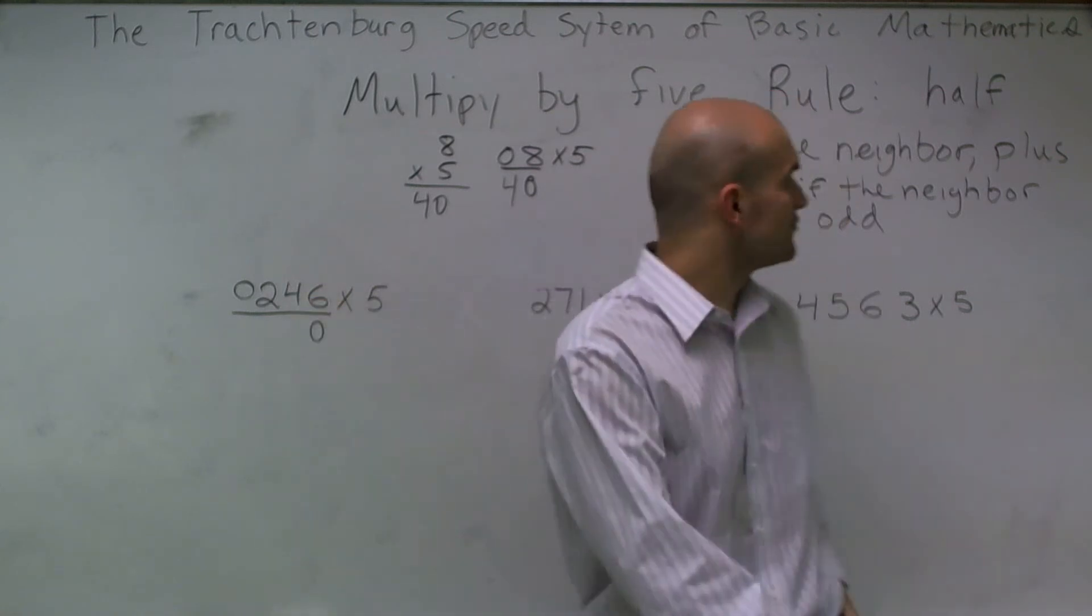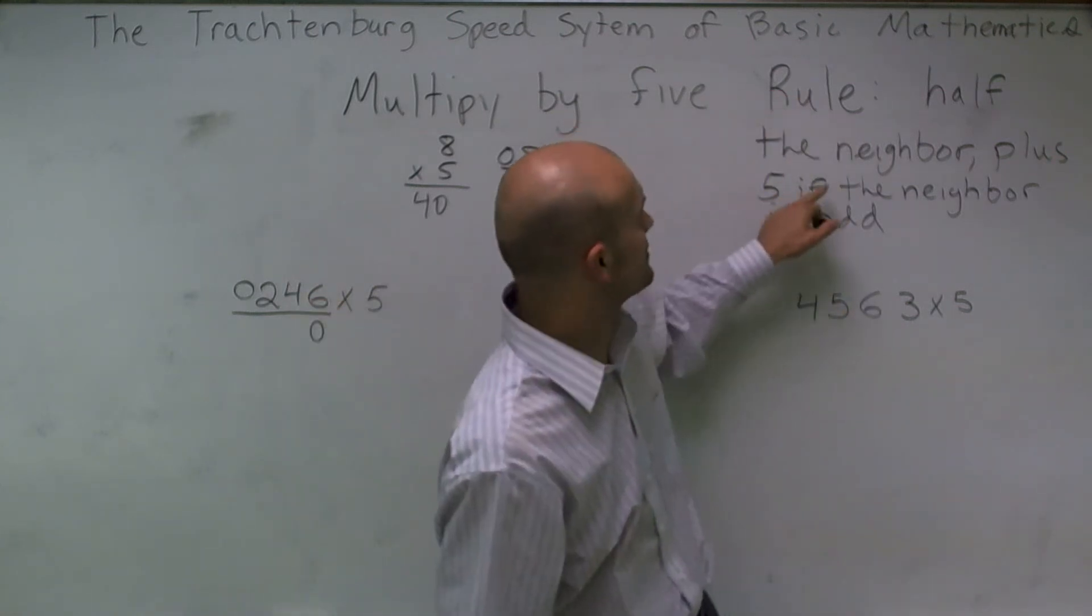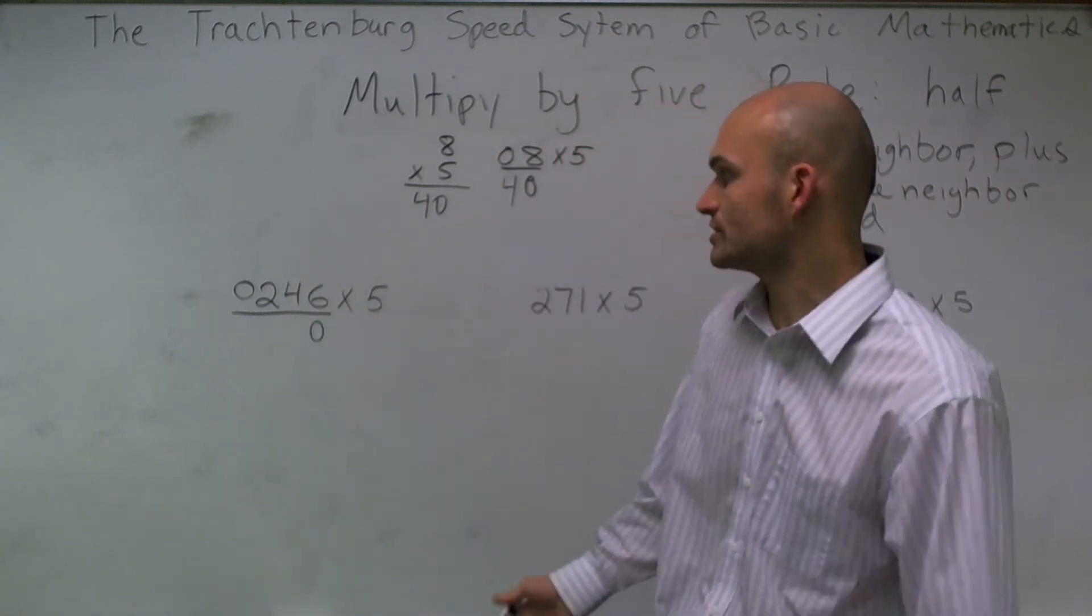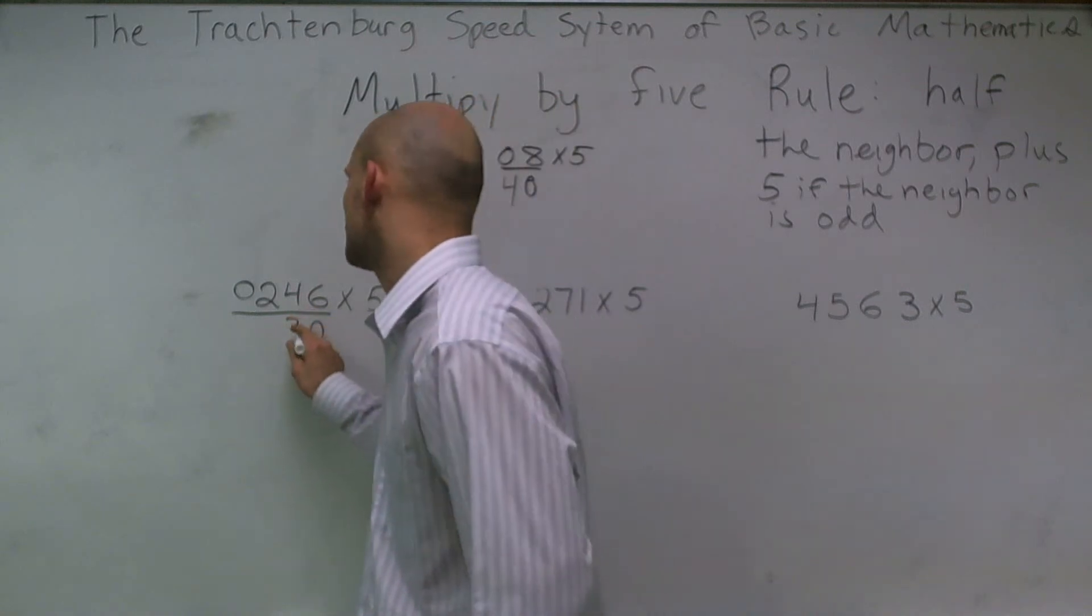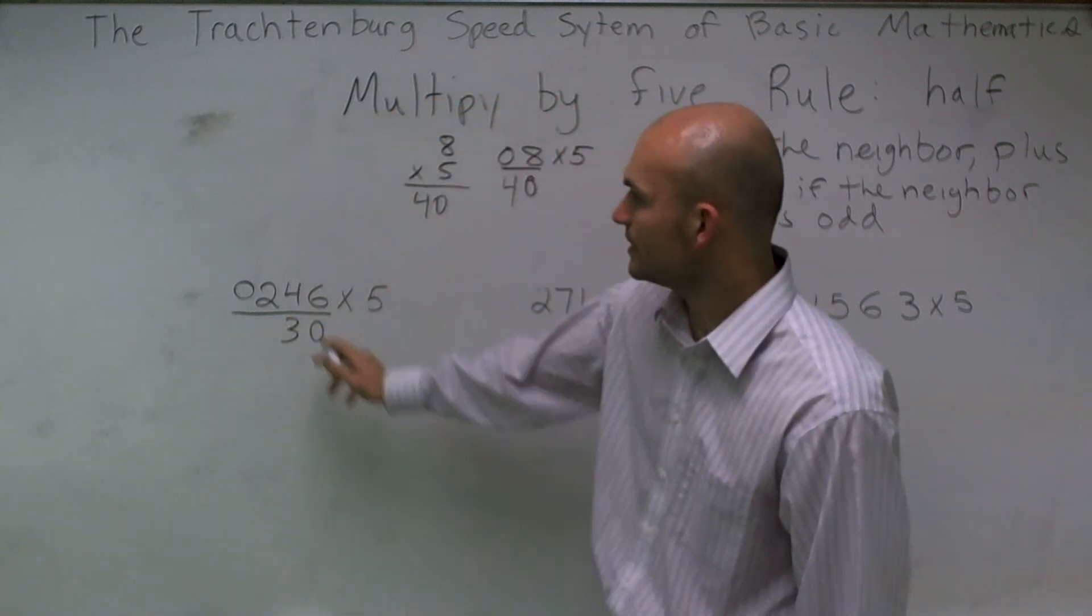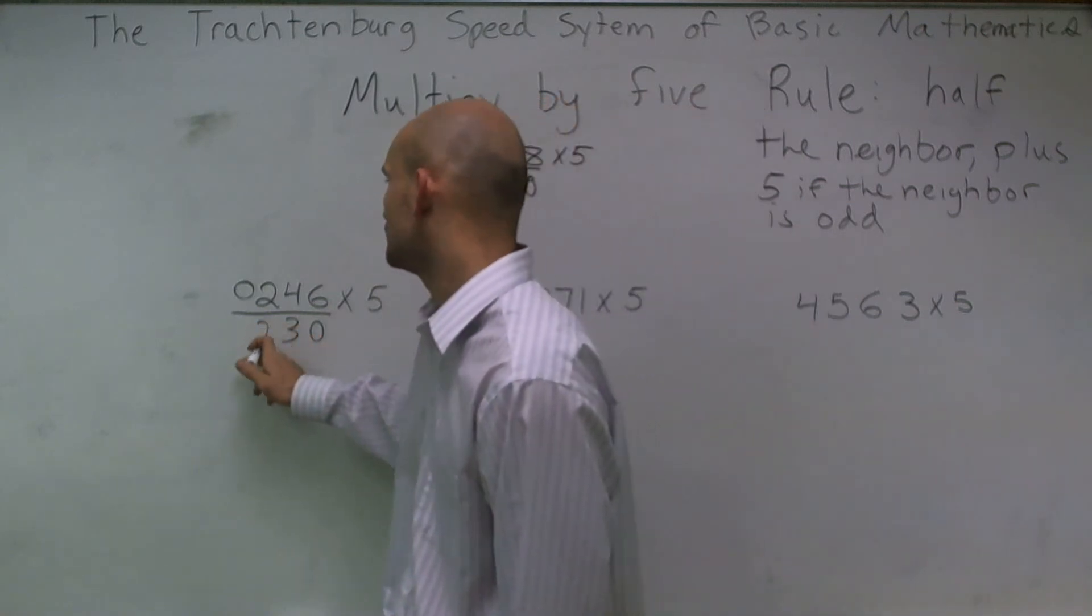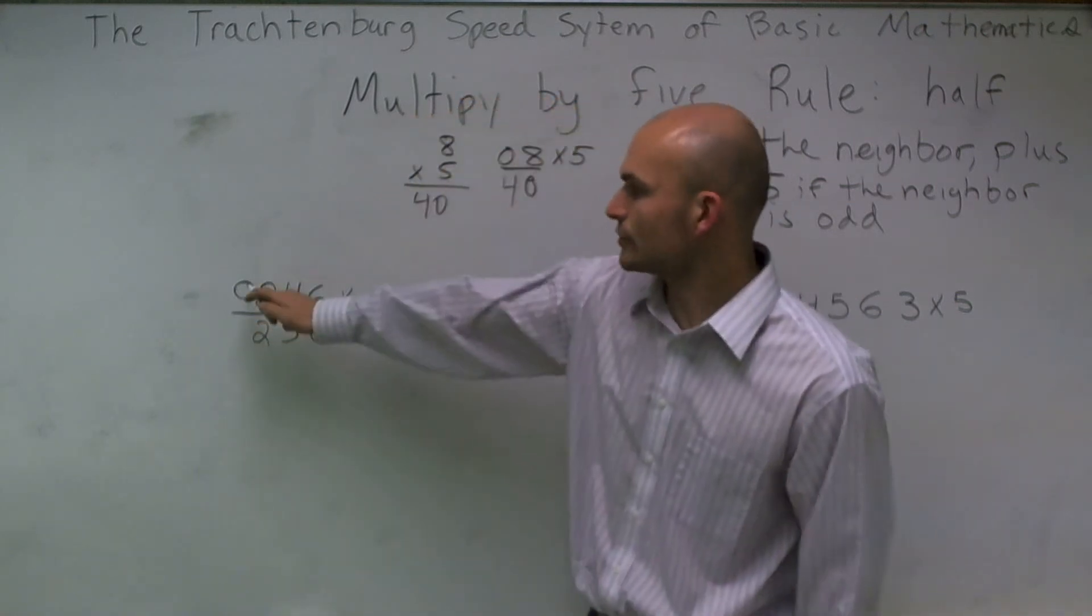So all you're going to do for the rule is that you're going to take half the neighbor. So I look at 4, half of my neighbor is 6, which is 3. Then I go over to 2, and I say half of the neighbor is 2.